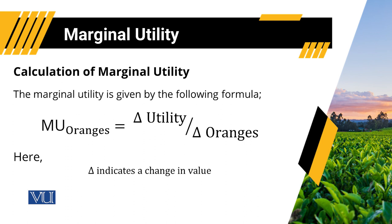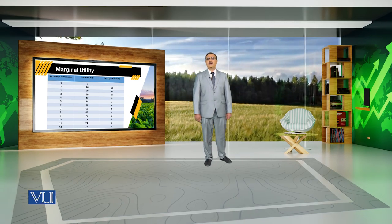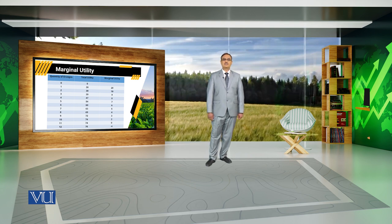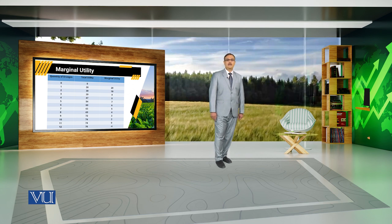For example, if our objective is to compute the marginal utility of oranges, then it indicates the change in utility because of change in quantity of oranges, where the delta sign indicates a change in value. Consider a table where the first column indicates the quantity of oranges, the second column indicates the total utility obtained from that quantity, and the third column reports the marginal utility.